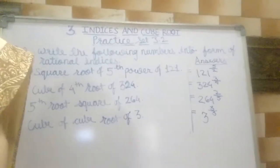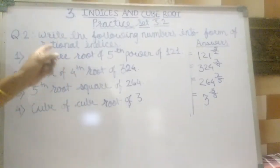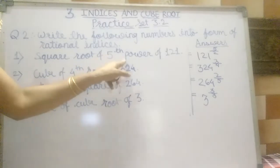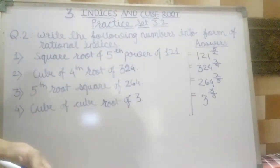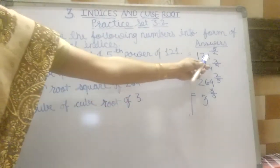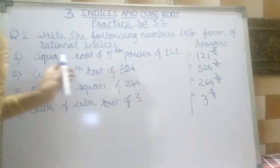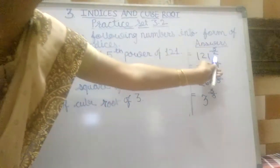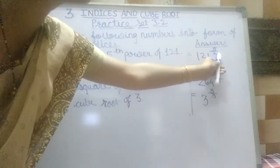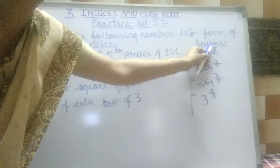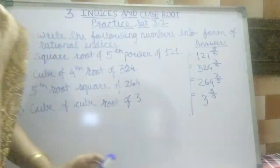Again I repeat: square root of 5th power of 121. 121 is our base. In the index, root is 2 and power is 5, so 5 by 2 is our index.